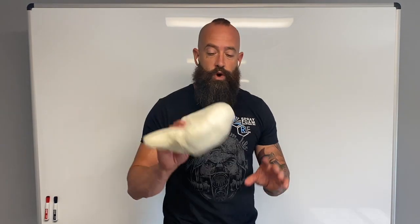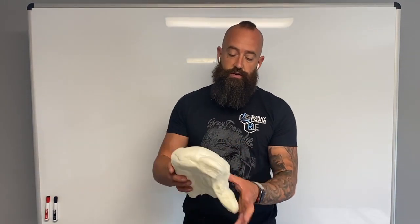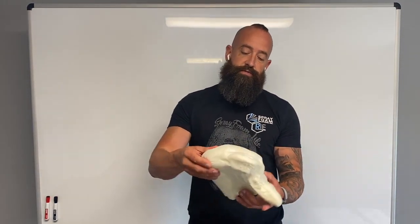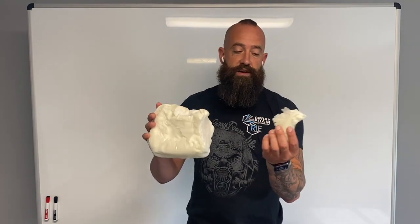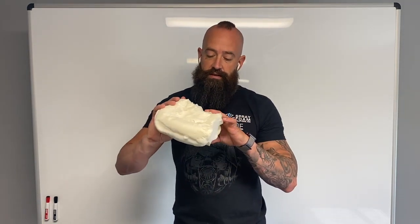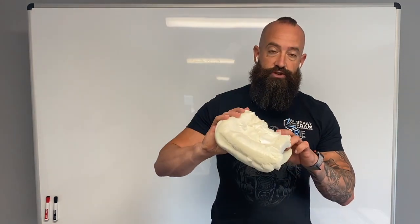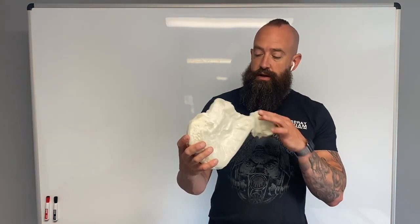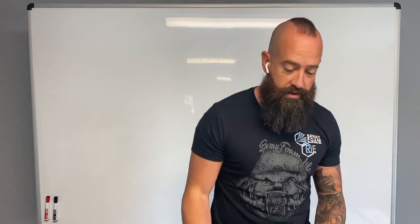This right here would be our open cell foam. It's a light product. You can squish it with your fingers and you can break it very easily. The inside texture of it looks kind of like a sponge, with bigger open pores in there.